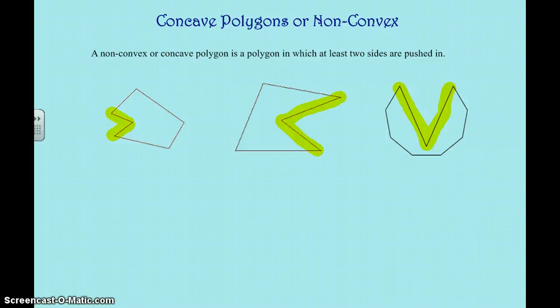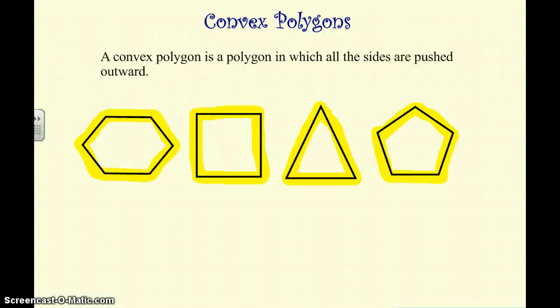Alright, let's do a quick review. We have two really important words today. We have convex polygons. The convex polygon is a polygon in which all the sides are pushed outward. So they're all pushed out. Nothing is caved in on a convex polygon.